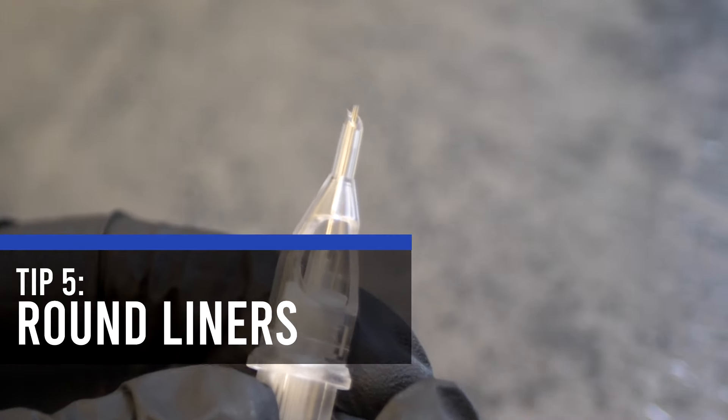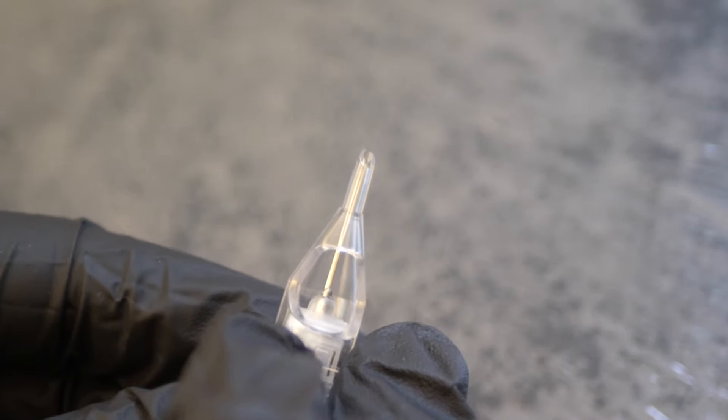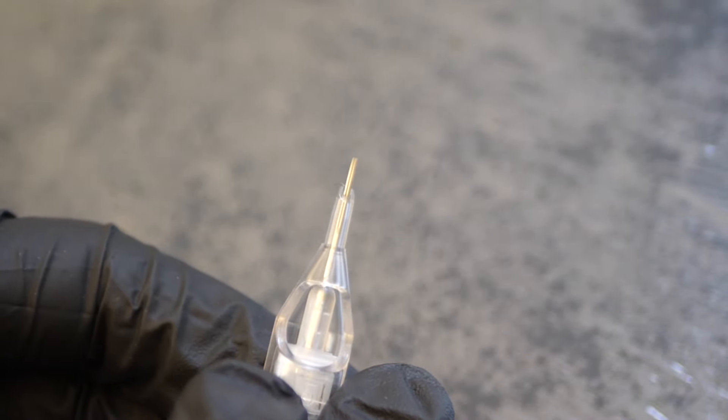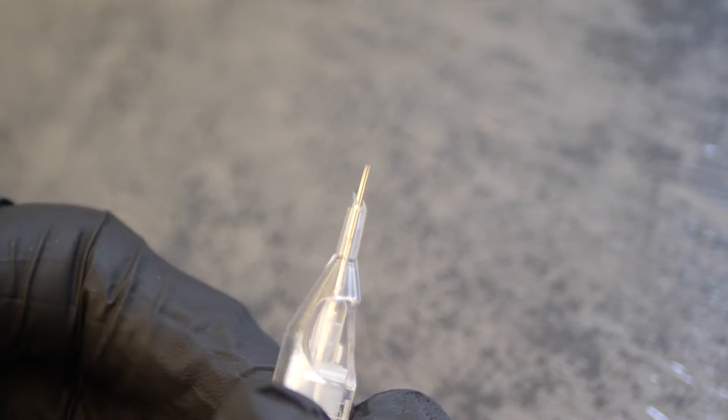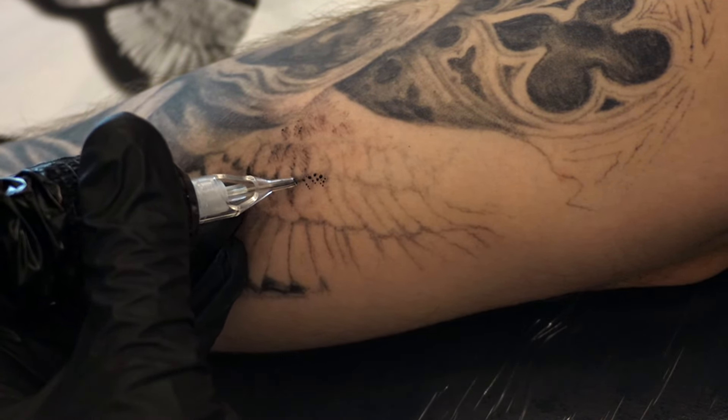But guys, next tip now and this is about using a round liner or a round shader to shade your tattoo, so I'm not just using a magnum. Mags are good for smooth shading, but they aren't always the most accurate for getting into those little corners or for just giving you a textured effect on your shading.